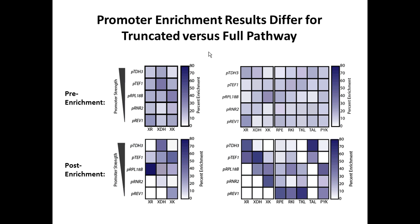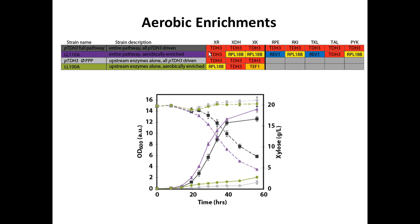This showed us that how you build your library can directly impact the landscape — using only the first three enzymes gives a different landscape with a local optimum that may not reach the global optimum of the full-length pathway. We tested this by taking individual strains from each library and doing growth curves. The full-length pathway enriched strain (purple) grows much better than the truncated (green). Optimizing does a little better than simply expressing each gene with the strongest TDH3 promoter, though they are comparable.